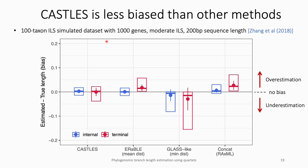This pattern also holds for larger trees. Here we see results on a dataset with 100-taxon trees and 1,000 genes under moderate ILS, with concatenation using RAxML added as an additional method. Similar to the quartet results, the glass-like method has a large underestimation bias. ARABLE and CASEL are almost unbiased for internal branches, shown in blue. However, ARABLE is biased for terminal branches, while CASEL is relatively unbiased. Concatenation is slightly biased toward overestimation for internal branches but has a much larger bias for terminal branches. In general, for methods other than CASEL, the bias is higher for terminal branches than internal branches — a pattern seen across all our experiments.